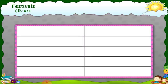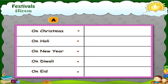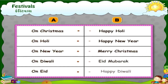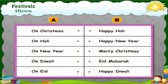Now, look at this table. In column A, there are some festival names, and in column B, there are some wishes that we use for these festivals. Let us read and match them: On Christmas, we say Merry Christmas. On Holi, we say Happy Holi. On New Year, we say Happy New Year. On Diwali, we say Happy Diwali. And on Eid, we say Eid Mubarak.